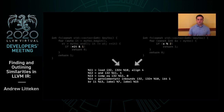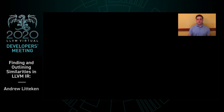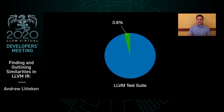It turns out these sorts of similarities are quite common. In the LLVM test suite, if we could deduplicate these similarities, we would reduce our instruction count per file by 3.8% on average. It would be great if we were able to work with these structural rather than identical similarities.